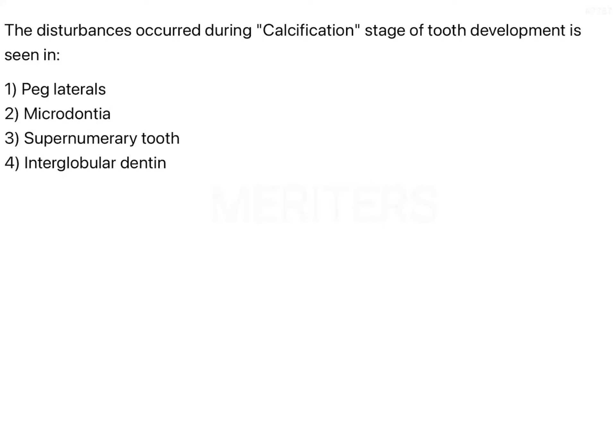The question is: disturbances occurred during the calcification stage of tooth development. During tooth development, there are two different types of stages. One is your morphological stages — the cap stage, bell stage, advanced bell stage, bud stage. These are morphological. On the other hand, you have physiological stages, as described by Orwin in the 12th edition.